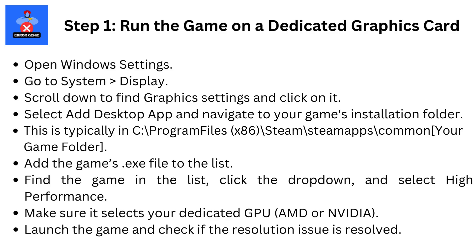Step 1: Run the game on a dedicated graphics card. Open Windows Settings, go to System, then Display. Scroll down to find Graphics Settings and click on it. Select Add Desktop App and navigate to your game's installation folder. This is typically in C:\Program Files (x86)\Steam\steamapps\common\[your game folder].